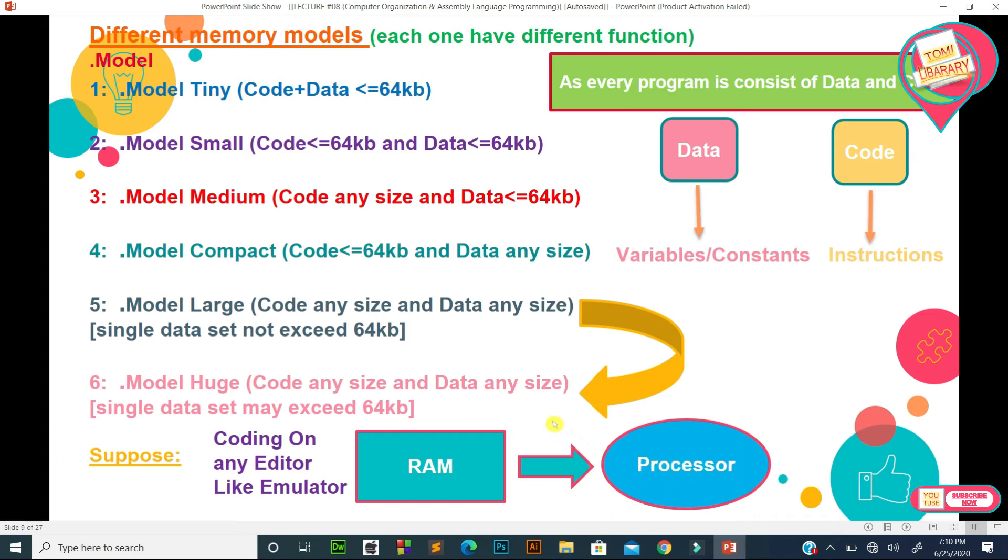Number one: .MODEL Tiny. When we write .MODEL Tiny, some space is reserved in RAM. How much space is reserved? If code plus data combined space needs to be less than or equal to 64 kilobyte reserved in RAM, then use Tiny. Means .MODEL Tiny reserves total combined space in RAM less than or equal to 64 kilobyte.